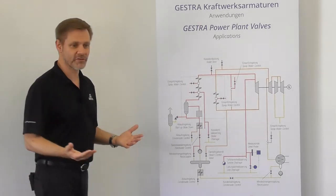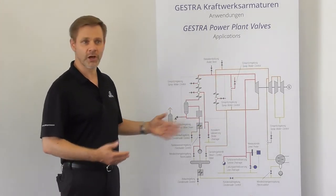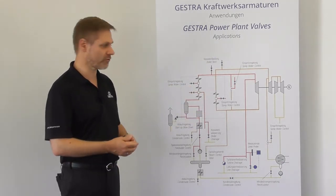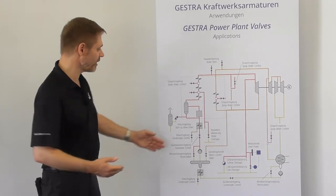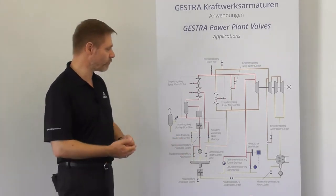To get the steam for the turbine, we have the boiler consisting of an evaporator, the super heaters and reheaters. The boiler will be fed by the boiler feed pump which gets the water from the feed water tank.